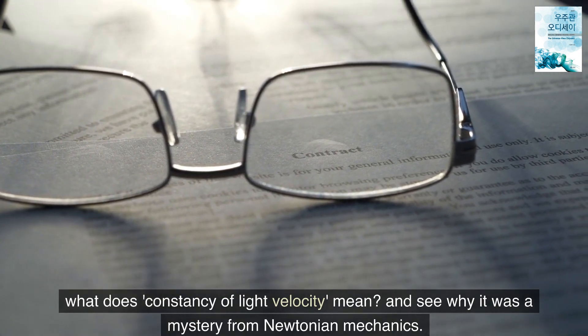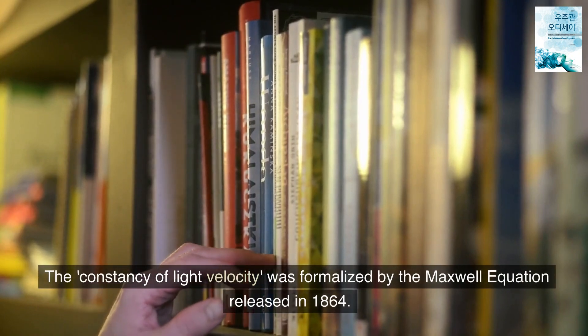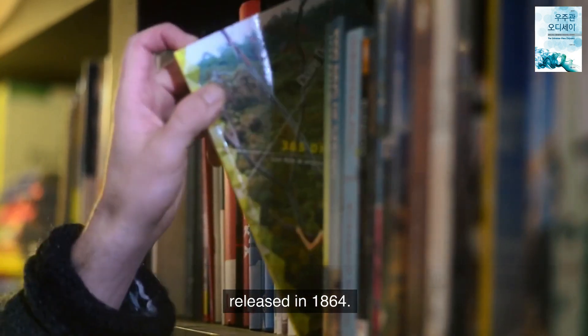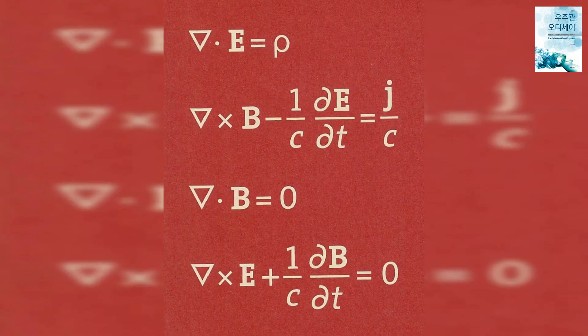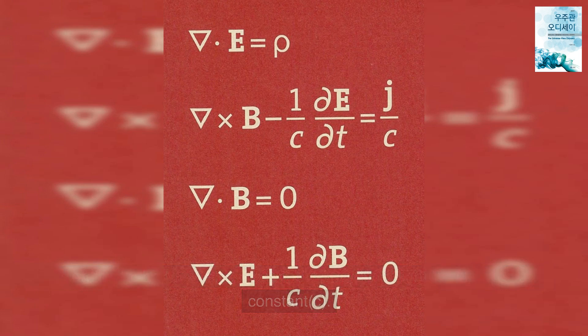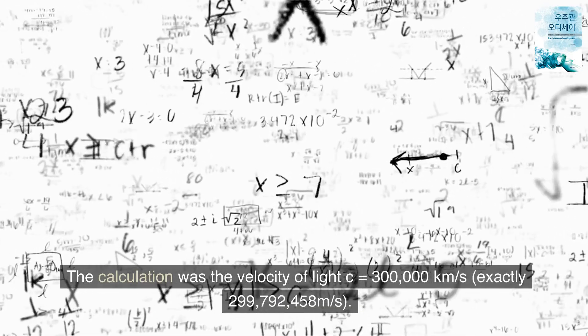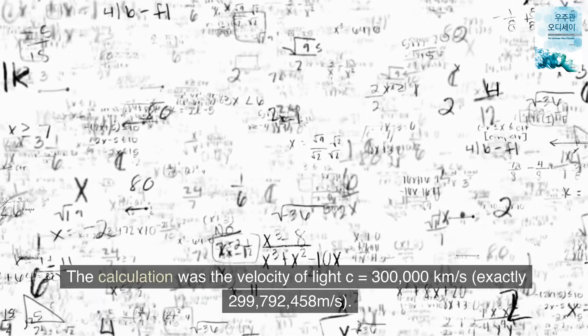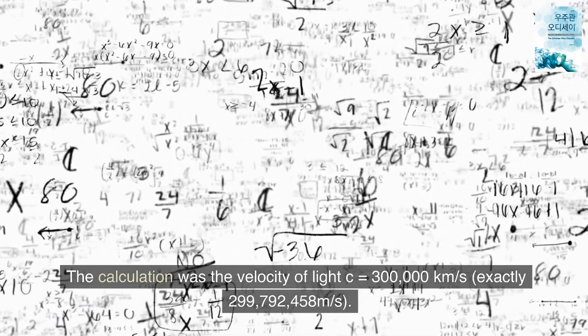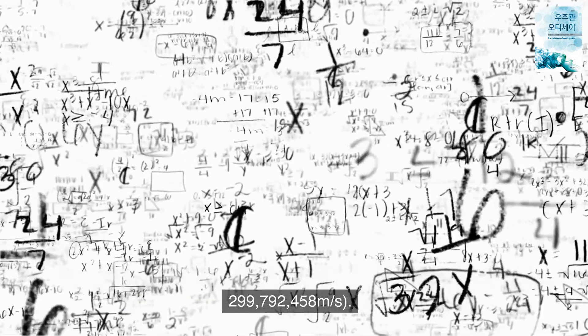The constancy of light velocity was formalized by the Maxwell equation released in 1864. According to the Maxwell equation, the velocity of light is displayed as a constant C. C means constant. The calculation was the velocity of light C equals 300,000 kilometers per second, exactly 299,792,458 meters per second.